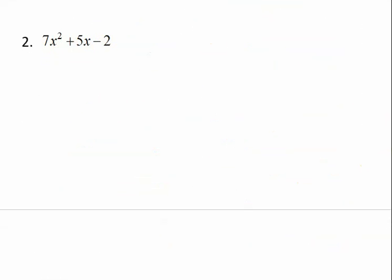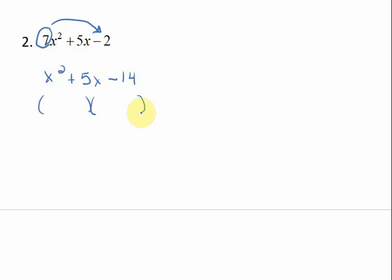Let's do another one. We have 7x squared plus 5x minus 2 — a difficult trinomial, so I'll use the slide and divide method. I take the leading coefficient and slide it to the back and multiply it times the constant, giving me x squared plus 5x minus 14. I factor that into two binomials: x and x. The second sign is negative, so the signs are different — one positive and one negative. The factors of 14 are 1 and 14, and 2 and 7. I need factors that subtract to give 5, which is 2 and 7. The biggest number is positive, so 7 is positive and 2 is negative.